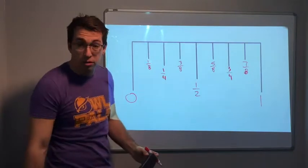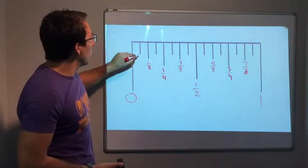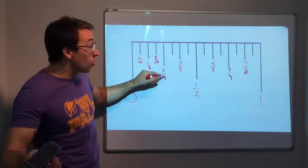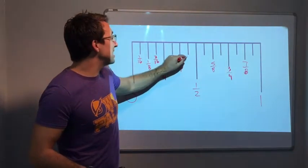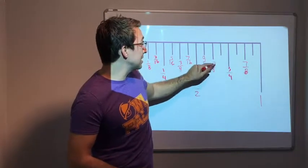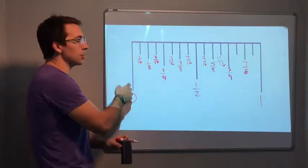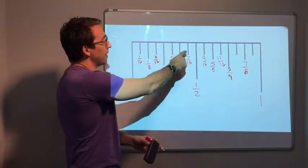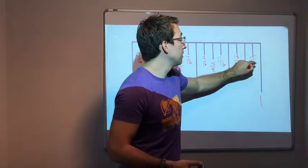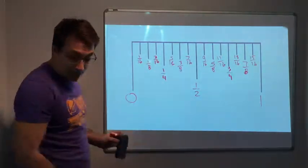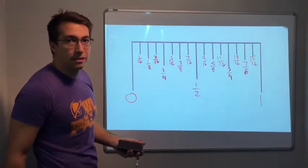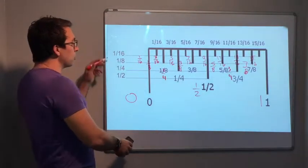And then sixteenths: one out of sixteen, two out of sixteen — that's an eighth. Three sixteenths, four sixteenths — that's a quarter. Five sixteenths, six sixteenths — that's three eighths. Seven sixteenths, eight sixteenths — that's a half. Nine sixteenths, ten sixteenths — that's five eighths. Eleven sixteenths, twelve sixteenths — that's three quarters. Thirteen sixteenths, fifteen sixteenths. Notice the remaining fractions are all odd numbers: one, three, five, seven, nine, eleven, thirteen, fifteen. Every inch is divided by sixteenths.